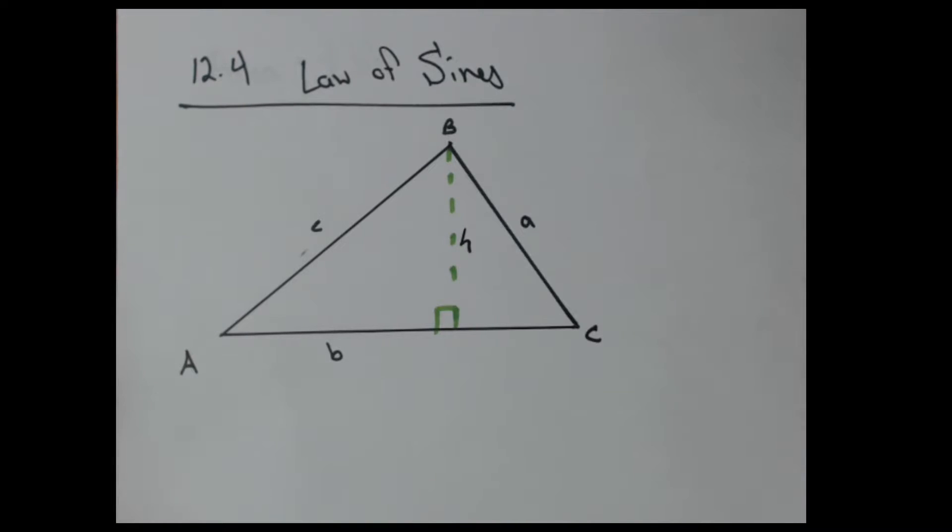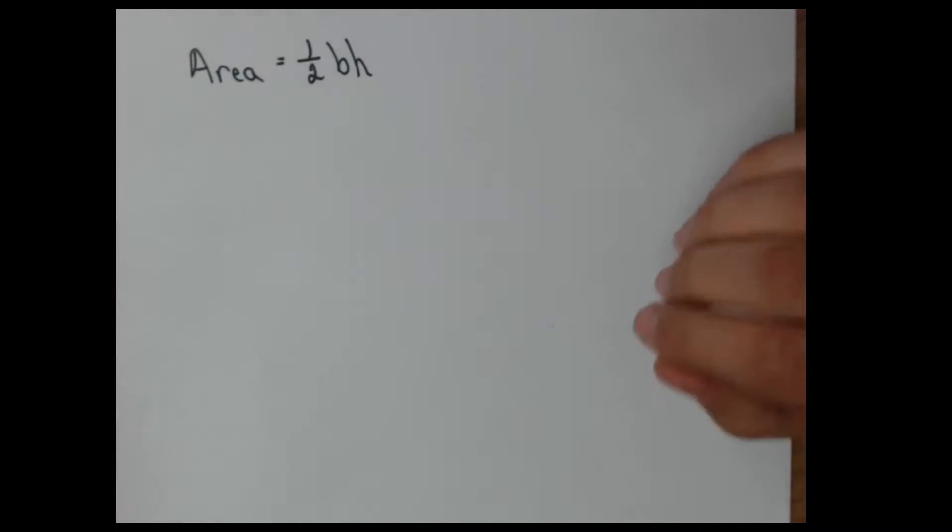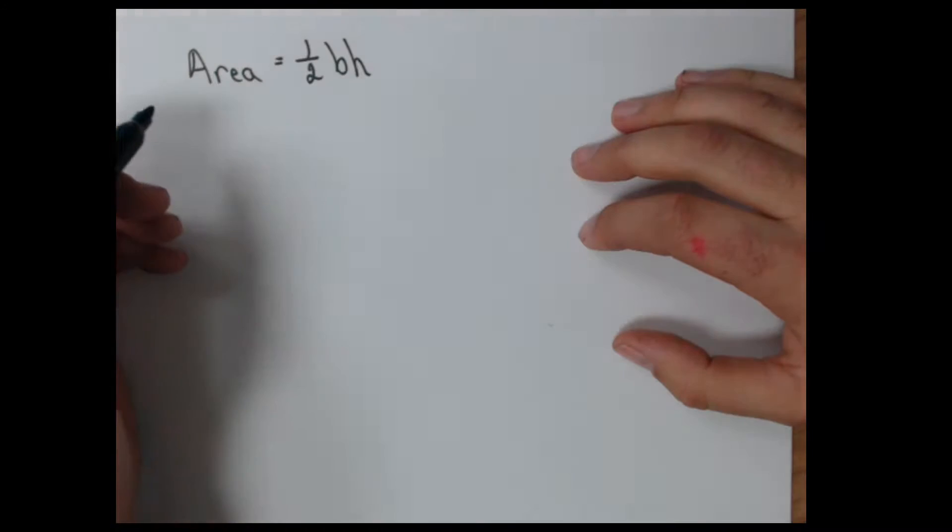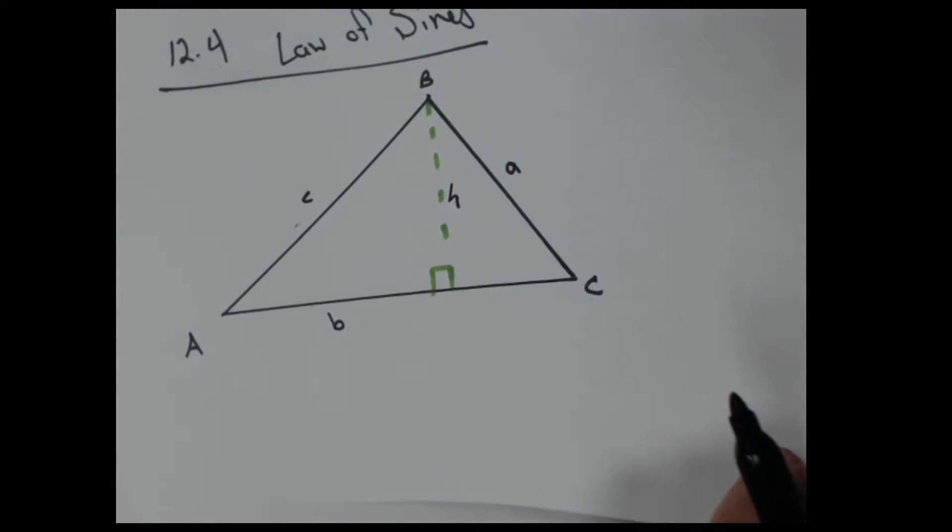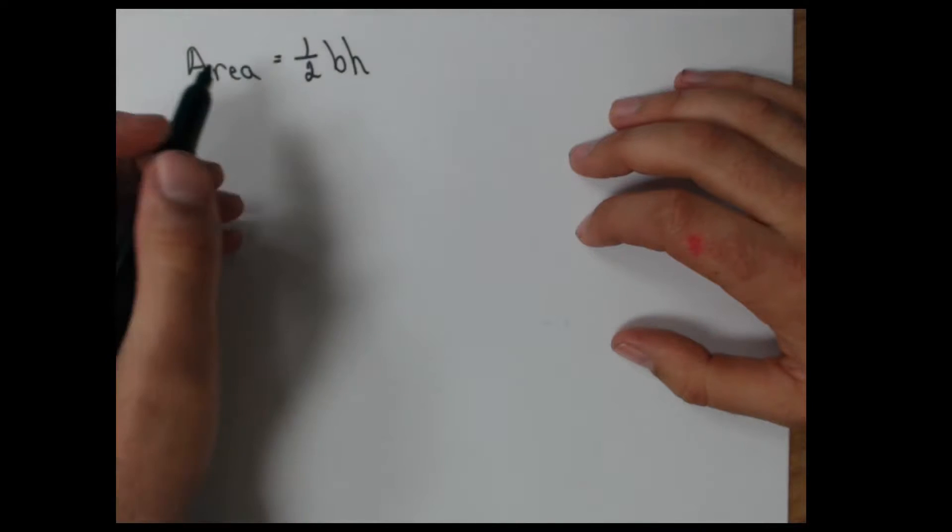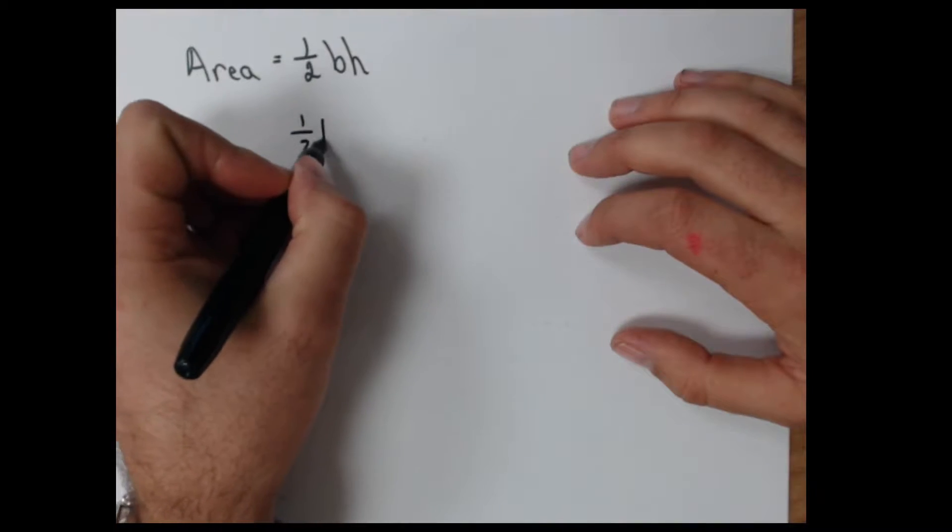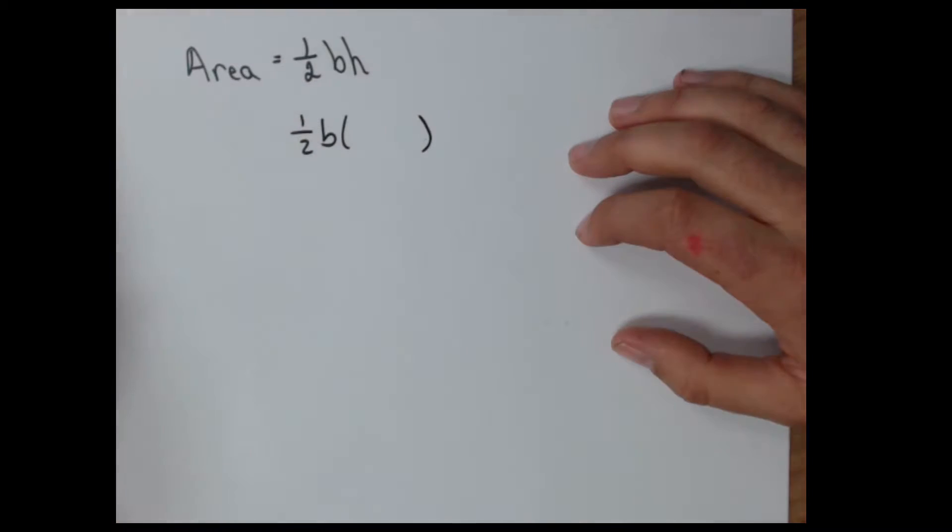And if you know anything about triangles, to find the area of it, we have base times height. And then we multiply by one half. So let's try and find out the height of our triangle. That's the only part we really don't know. Well, B is actually B from our diagram. So I have one half times B, but I need to find out what H is.